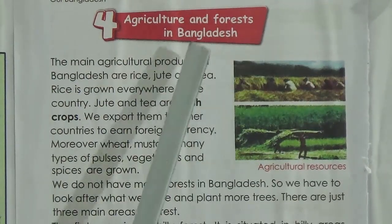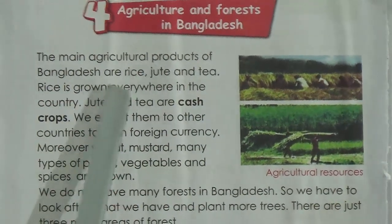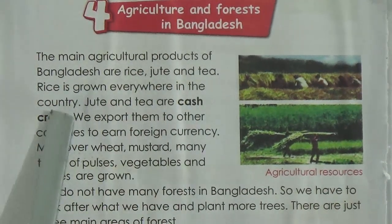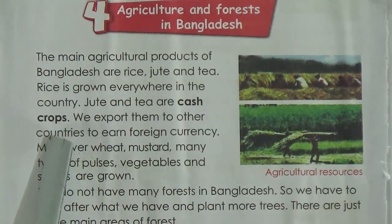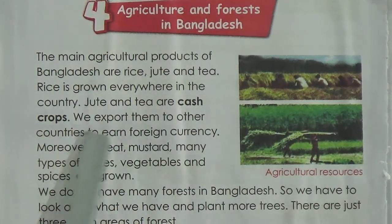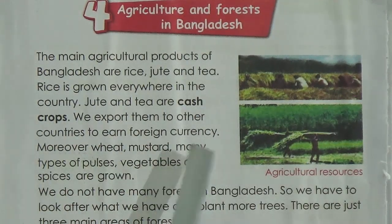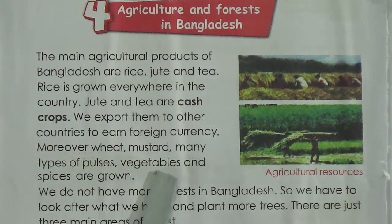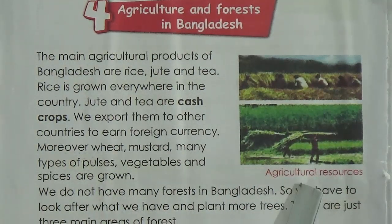Now Lesson 4: agriculture and forest in Bangladesh. The main agricultural products of Bangladesh are rice, jute, and tea. Rice is grown everywhere in the country. Jute and tea are cash crops — we export them to other countries to earn foreign currency. Moreover, many types of pulses, vegetables, and spices are also grown.